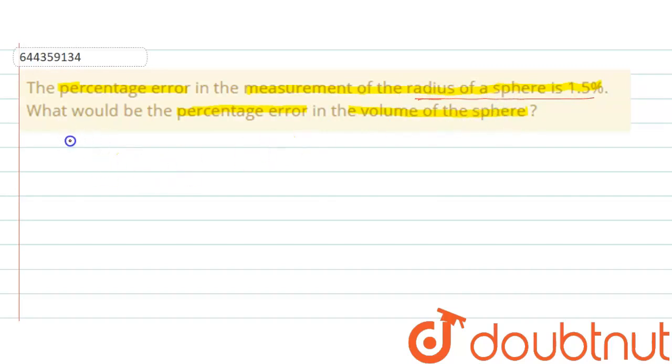As we know from our previous knowledge, the volume of a sphere is denoted by V and is given as 4/3 π r³.